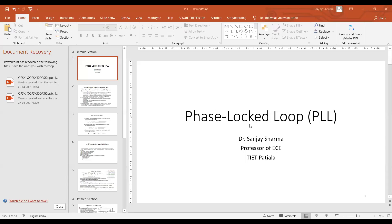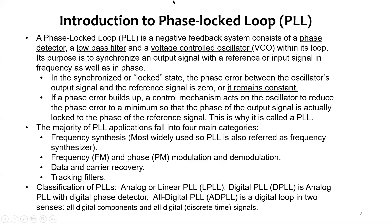Today's lecture is on phase lock loop, an important concept in communication systems. A phase lock loop is a negative feedback system with three components: a phase detector, a low pass filter, and a voltage controlled oscillator.